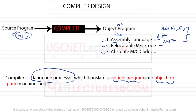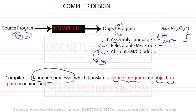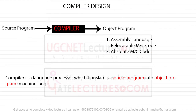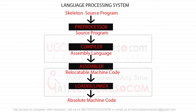These instructions depend on the CPU architecture or processor architecture. Relocatable machine code and absolute machine code are topics studied in operating systems. Absolute machine code means every instruction is given a physical address. It is recommended to watch the videos on memory management in operating systems, where I explained what absolute machine code and relocatable machine code are.